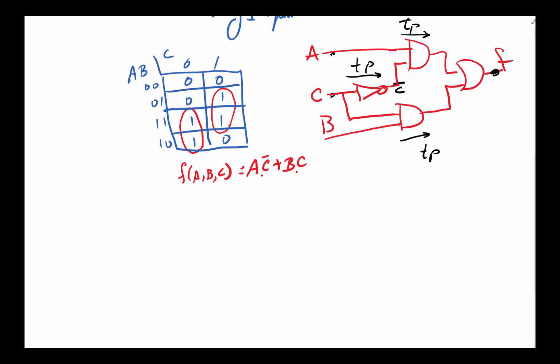One good example of showing a logic hazard: let's say our input a b c goes from 1 1 0 to 1 1 1. That's all we need to do — only one input is changing, so it's not a functional hazard of any sort. What could go wrong?